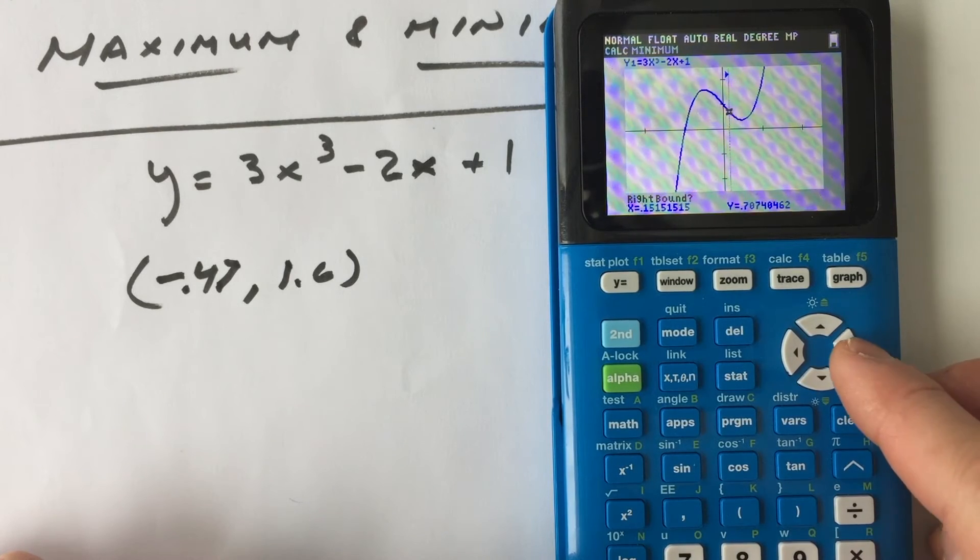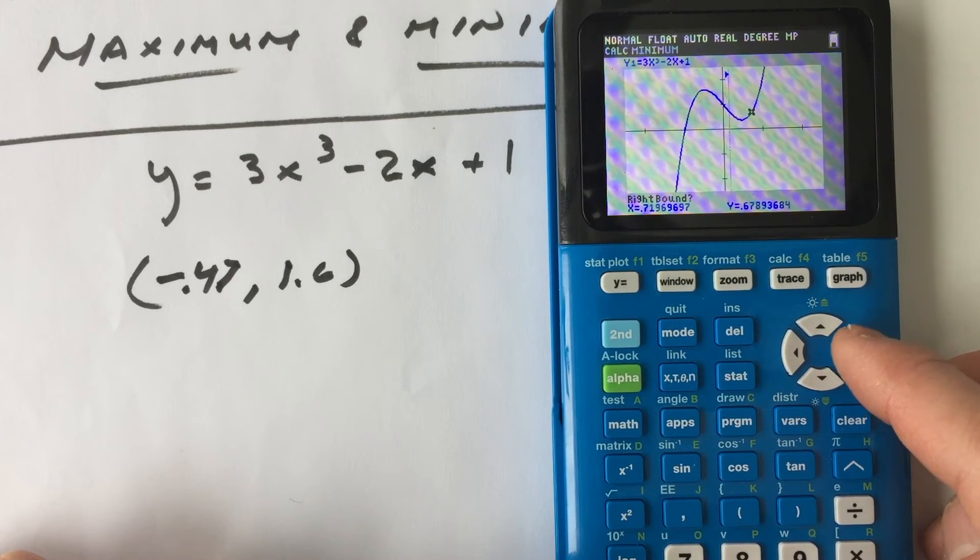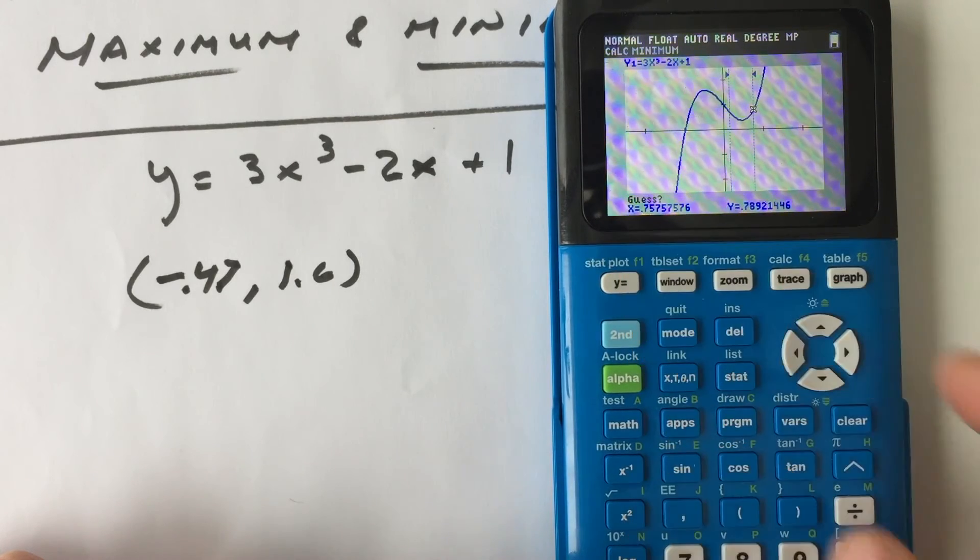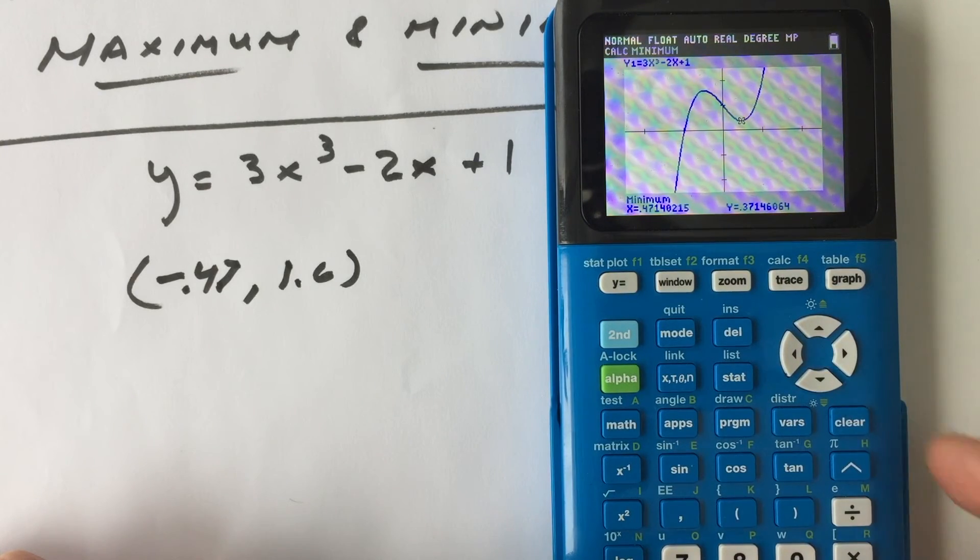And then you want to arrow just a little bit to the right of that low point. Enter. And then you see how it says guess. You hit enter one more time. And there you go.